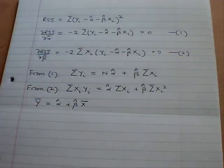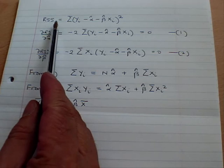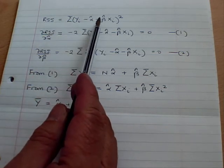Hi, in this video we're going to look at the derivation of the least squares normal equations. To derive the least squares normal equations we first start with the objective function which is to minimize the residual sum of squares as defined here.